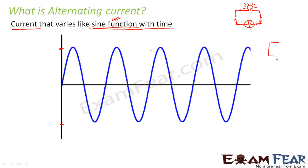Suppose you have a circuit with an AC power supply instead of a DC power supply. If alternating current is flowing through the circuit, then one electron here will move like this, back and forth, oscillating about its position. Similarly, all electrons move back and forth. So for some time it moves in the clockwise direction, then comes back anti-clockwise, then clockwise again, and so on.